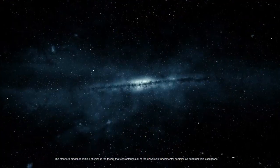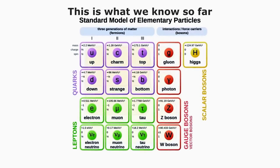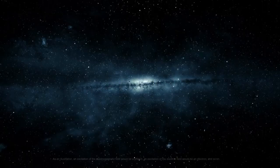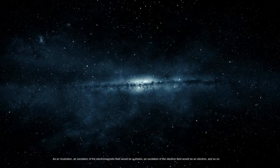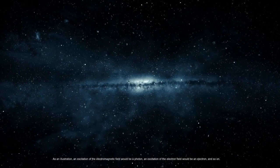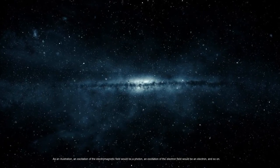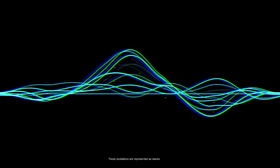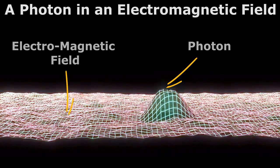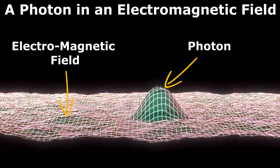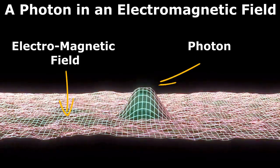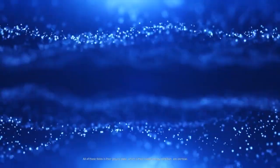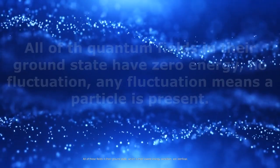The standard model of particle physics is the theory that characterizes all of the universe's fundamental particles as quantum field excitations. As an illustration, an excitation of the electromagnetic field would be a photon, an excitation of the electron field would be an electron, and so on. These excitations are represented as waves, but when they are well localized, as in a measurement, they appear to us as particles. These fields extend throughout all of space and time in all directions. All of these fields in their ground state, which is their lowest energy condition, are identical.